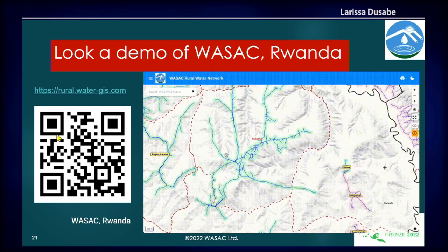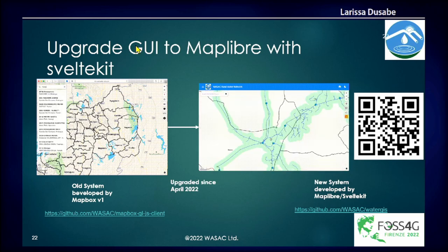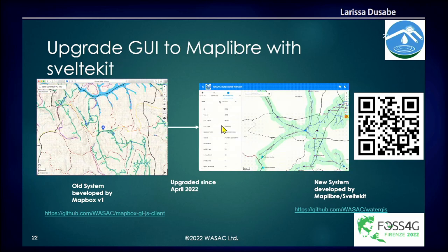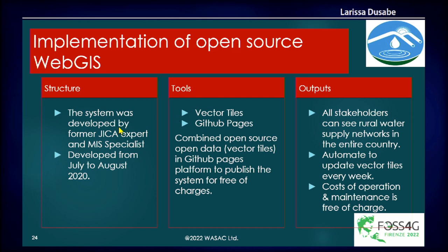This is the demo of our data — you can scan the QR code to access it. We upgraded from a graphic user interface to MapLibre, and you can install our app on Android or Apple phones. This system was developed by the JICA expert Jeanne Garashi, an MIS specialist, combining open source and open data on GitHub Pages to publish the system free of charge. Stakeholders can see the raw water supply network for the entire country. Automated update of vector tiles is done every week, and the cost of operation and maintenance is free.